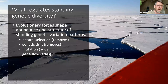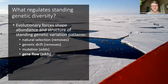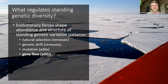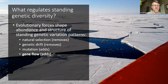What do we know about what regulates genetic diversity? There are a couple of very important forces that shape the abundance and structure of standing genetic variation. Natural selection and genetic drift each tend to remove genetic diversity from a system — either by retaining the most fit individuals or randomly fixing alleles. Mutation and gene flow, on the other hand, tend to add or augment a population's genetic diversity.